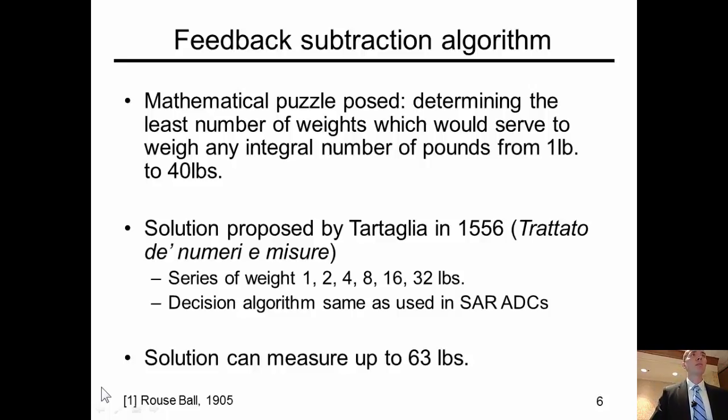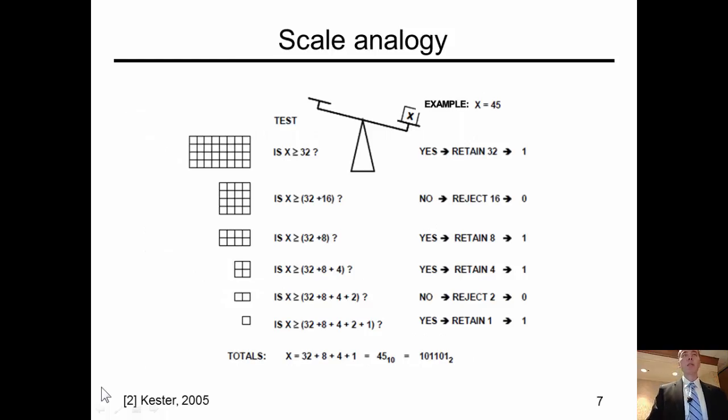And so there was this mathematical puzzle that was circulating around mathematicians, and they said, let's determine the least number of weights with which we could weigh on a scale an unknown that was somewhere between 1 and 40 pounds. So in 1556, in his treatises on numbers and measures, Totalia proposed basically the SAR algorithm. He said, give me binary weighted weights, and I'll use them in a fashion that we know today as the SAR algorithm. So that's this slide here.